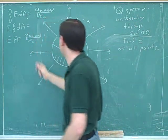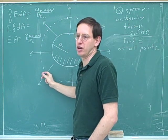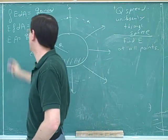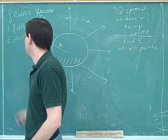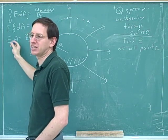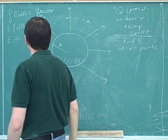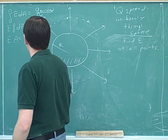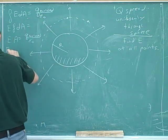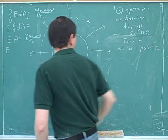The angle between each field vector and the normal is zero in all these cases, so cosine θ drops out, as I mentioned earlier. This formula just reduces to E times A.